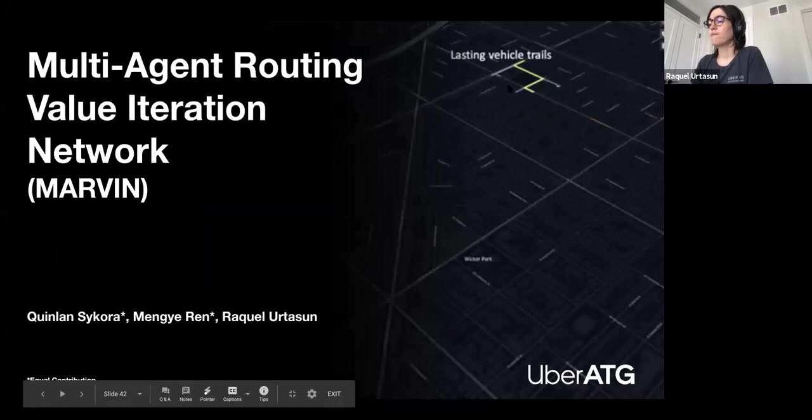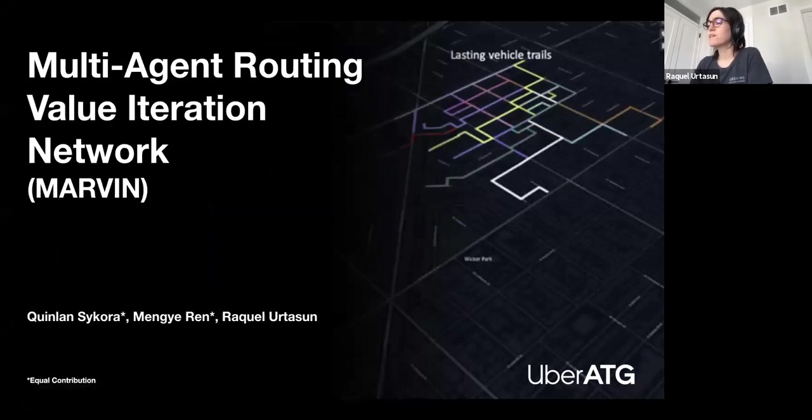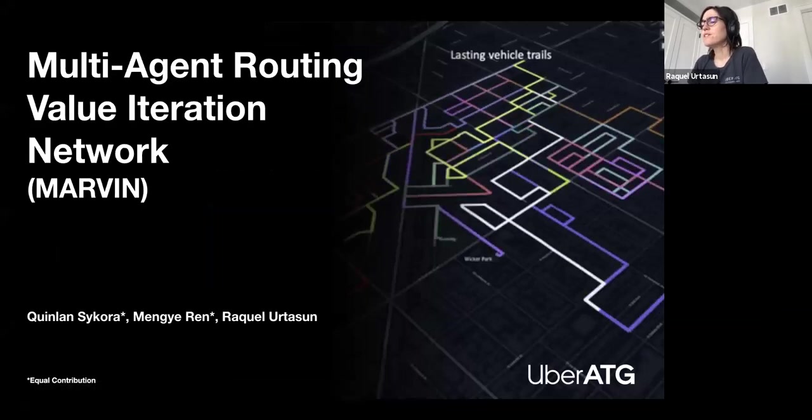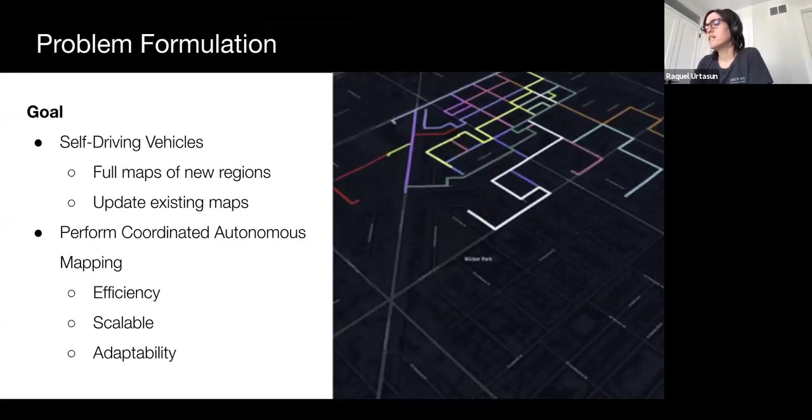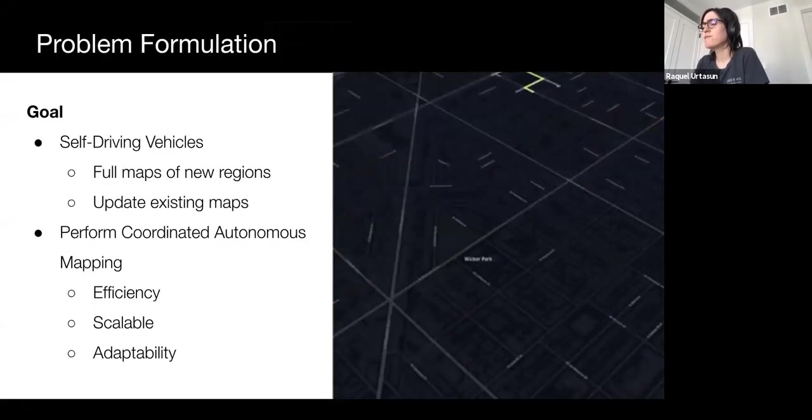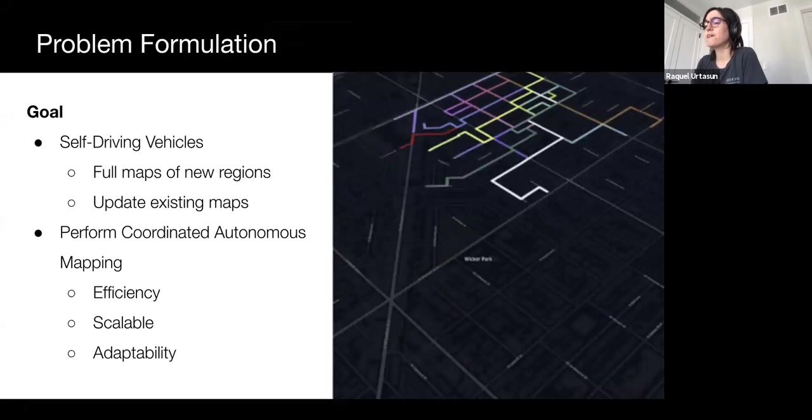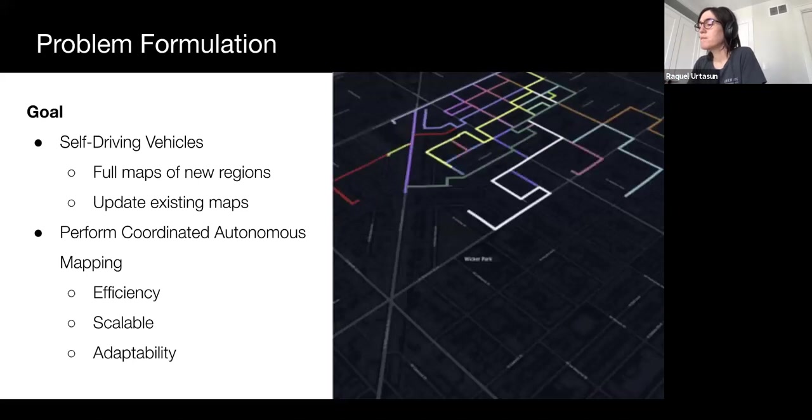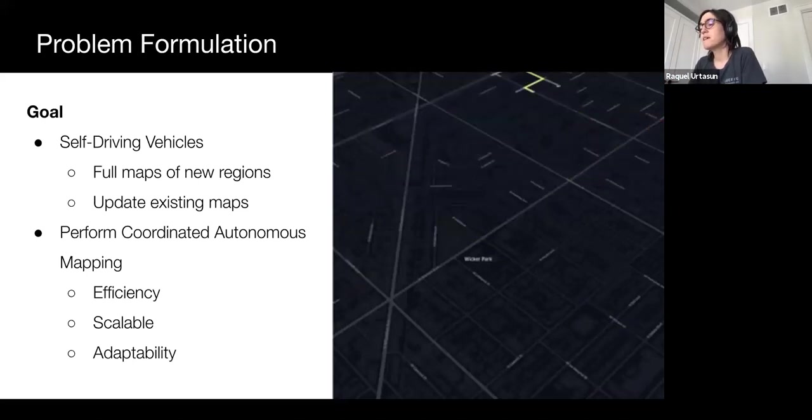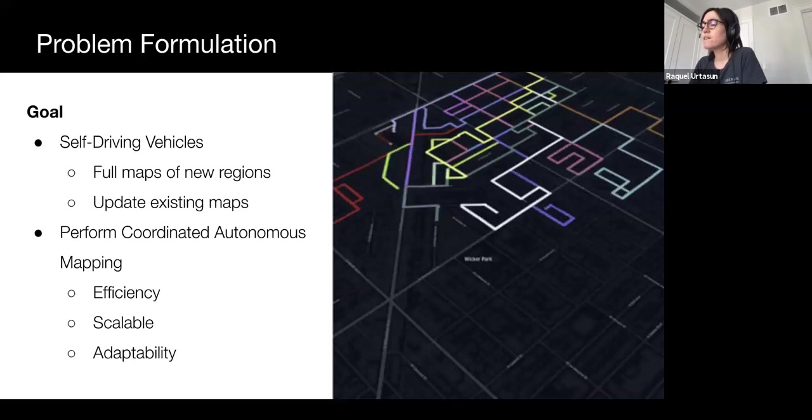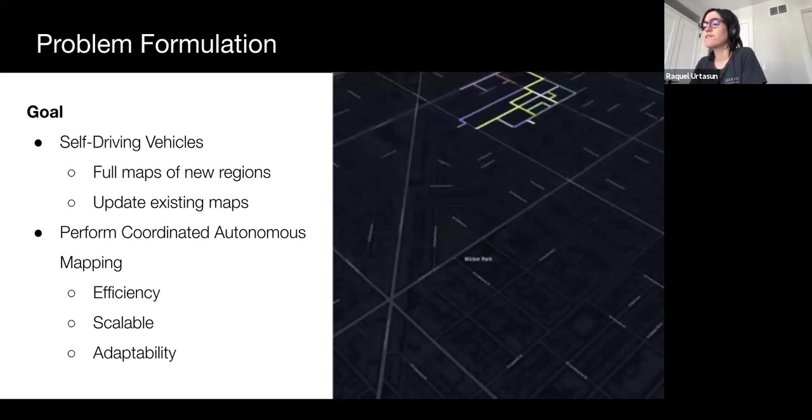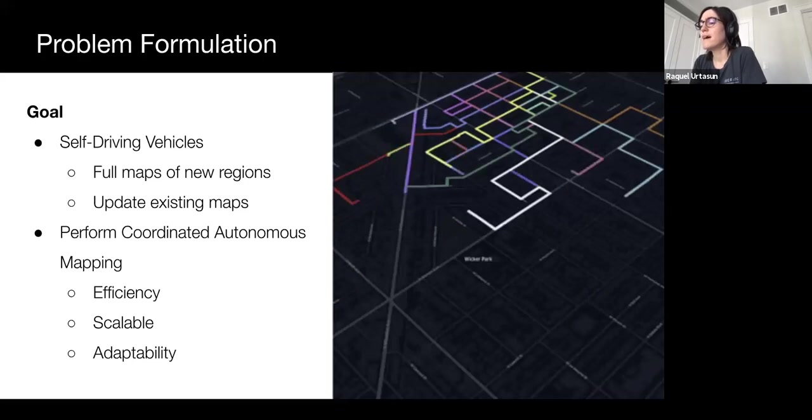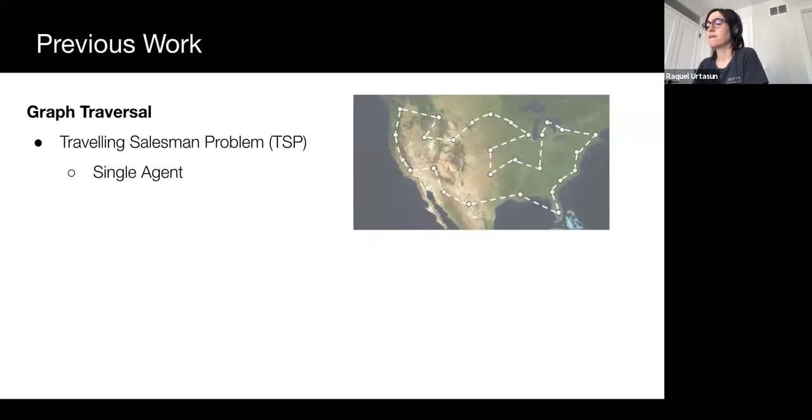There is little question self-driving vehicles are going to be central in our society in the future, with all the advancements and discoveries that are being made. As previously discussed, these vehicles require high definition maps of the regions that they are expected to drive in, and these maps require periodic updates. This motivates the need for a system that is able to autonomously map a region and coordinate an increasingly large fleet of vehicles in an efficient, scalable, and adaptable manner.